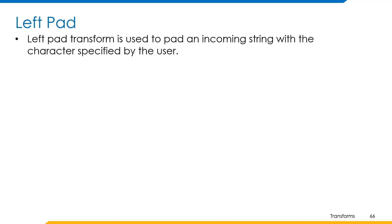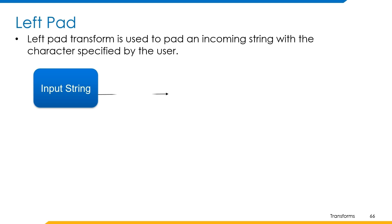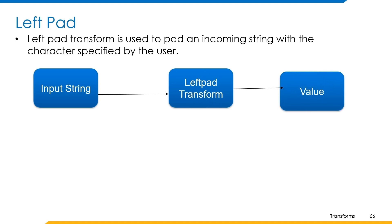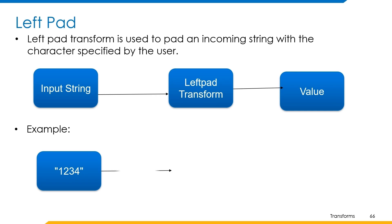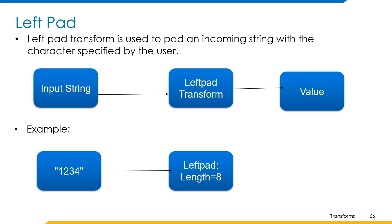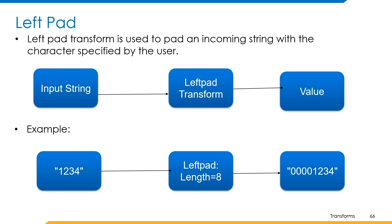Left pad transform is used to pad an incoming string with a character specified by the user to the left side of the string. We provide the input string, length, and padding character to this transform. As a result, the string is padded with the specified character, and the number of characters padded depends on the length provided. For example, with input 1234, length 8, and padding character 0, the output is 00001234 — 4 zeros are padded to the left side, making the total length 8. If the input is null, the returned value will be null.